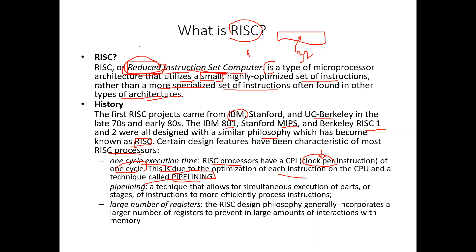Pipelining is a technique that allows for simultaneous execution of parts, or stages, of instructions to more efficiently process instructions. So in pipelining, one process — stage S1 — is running, and simultaneously another process, S2, is also working. When S1 produces output, it is stored in a register and that data is used by S2.